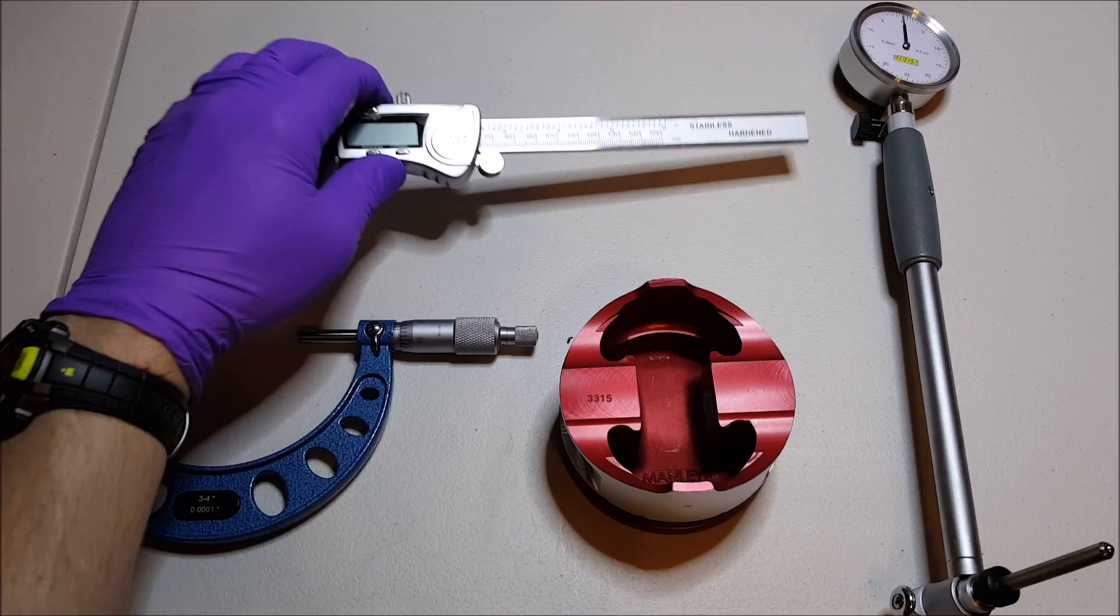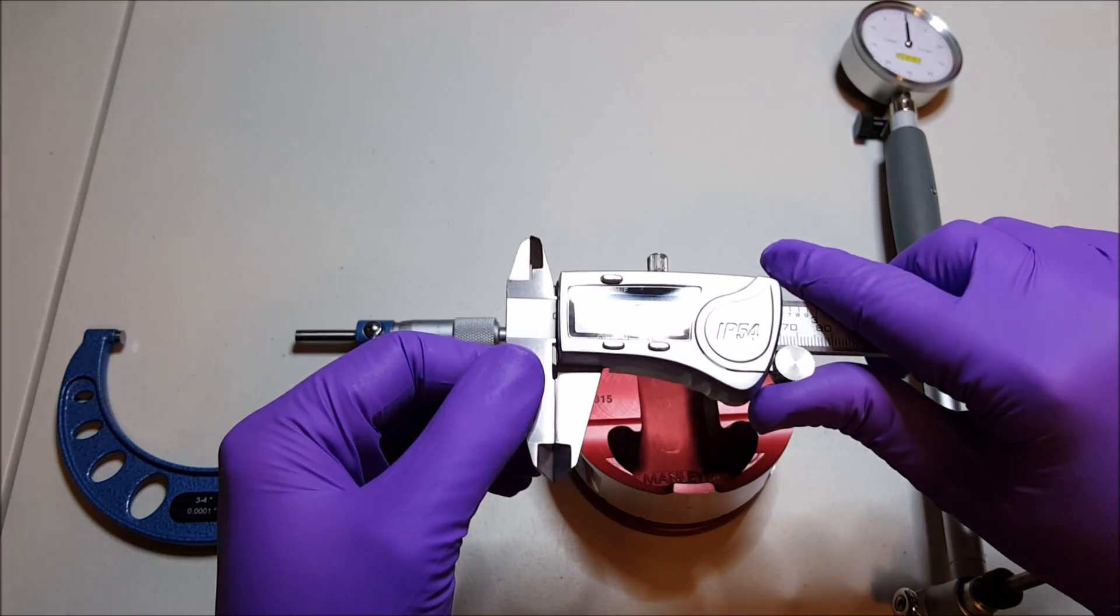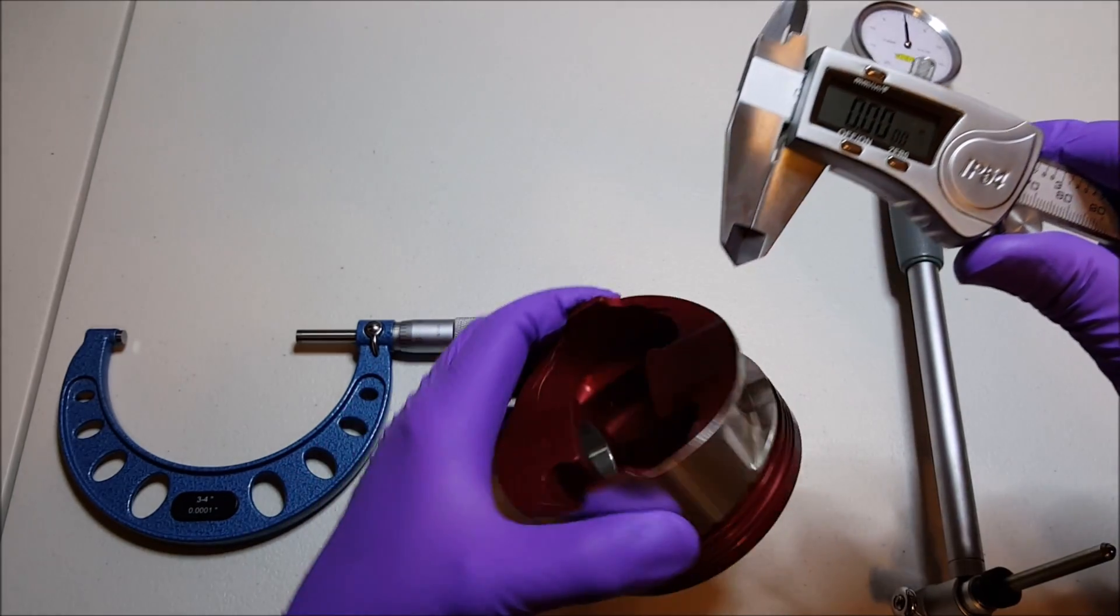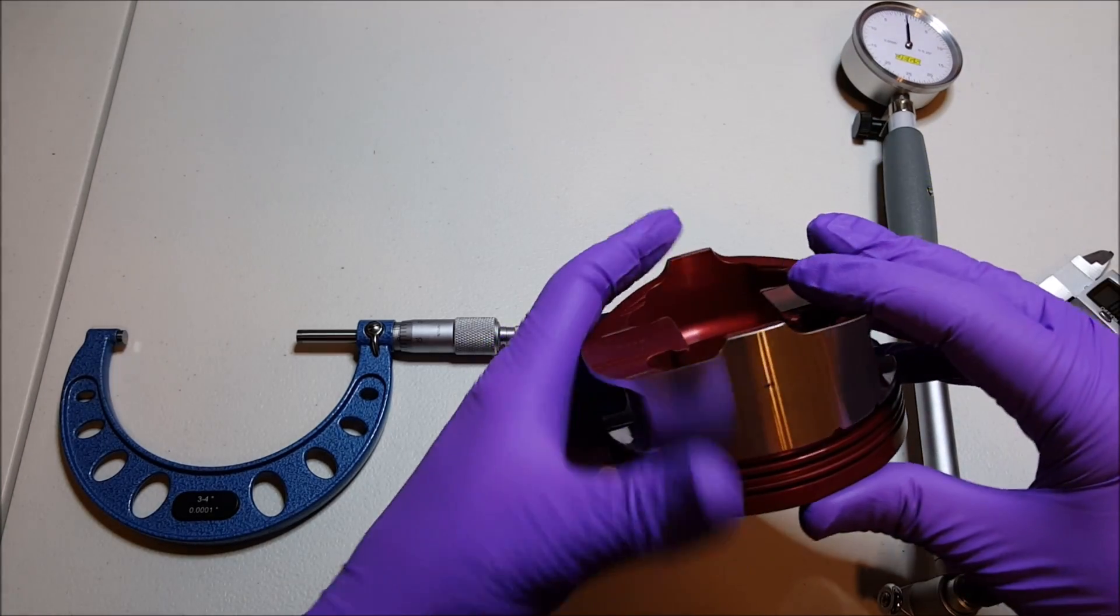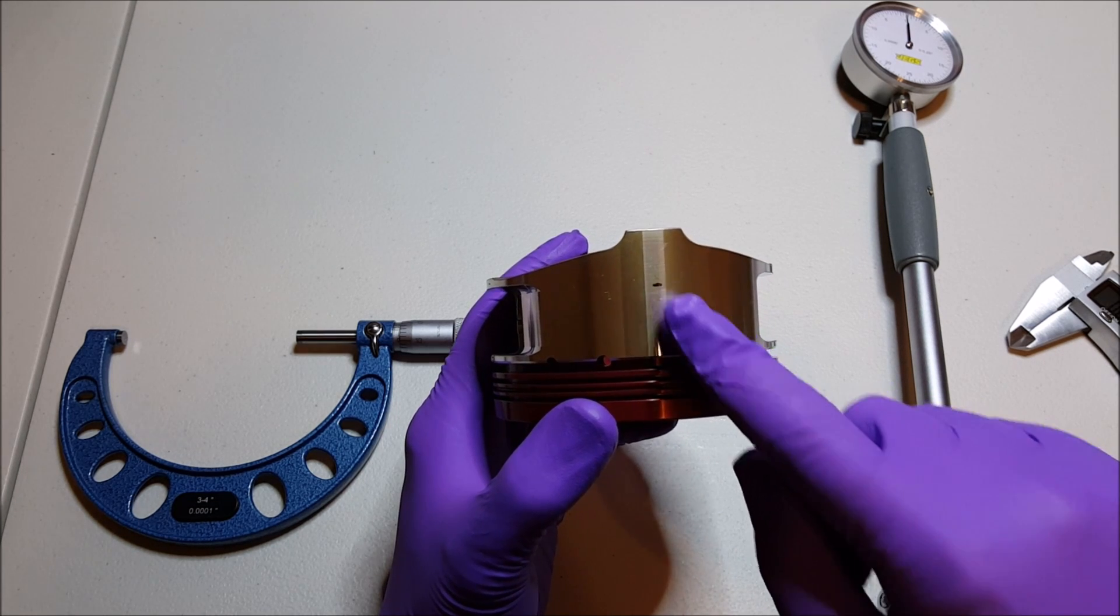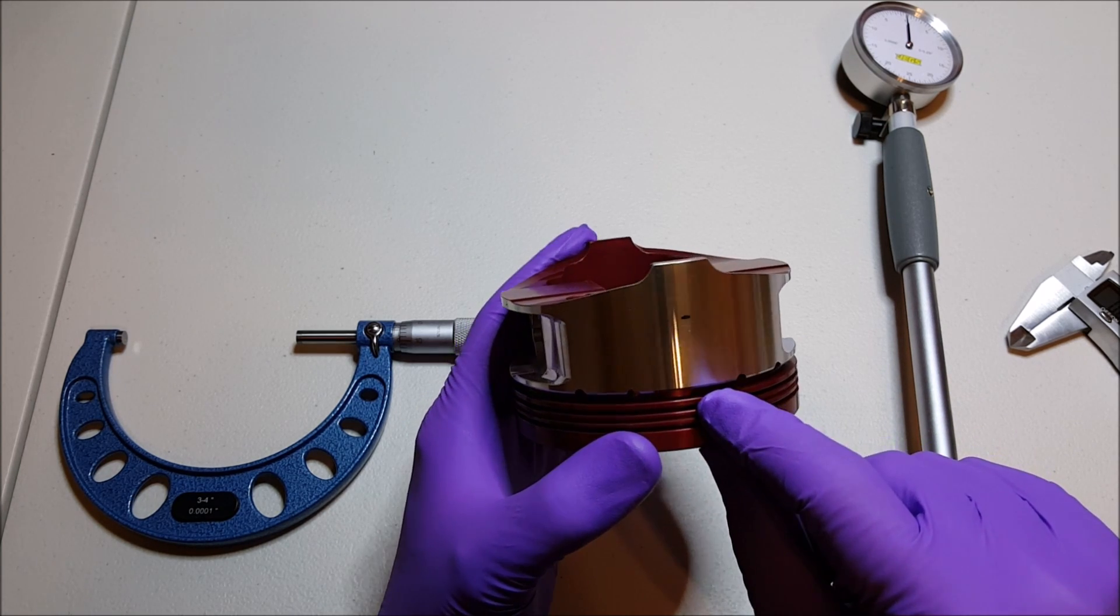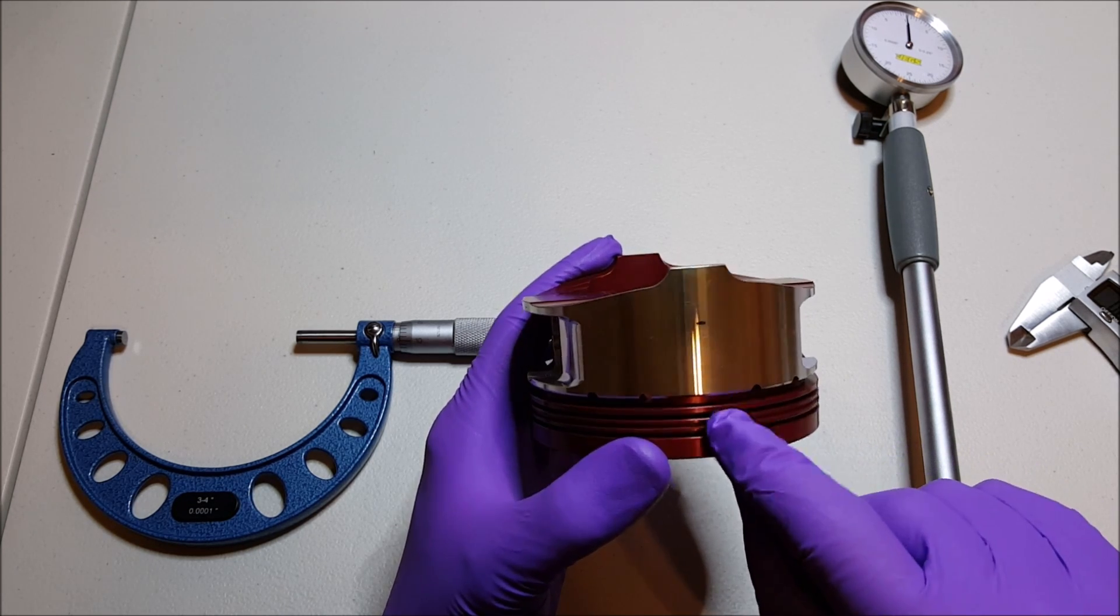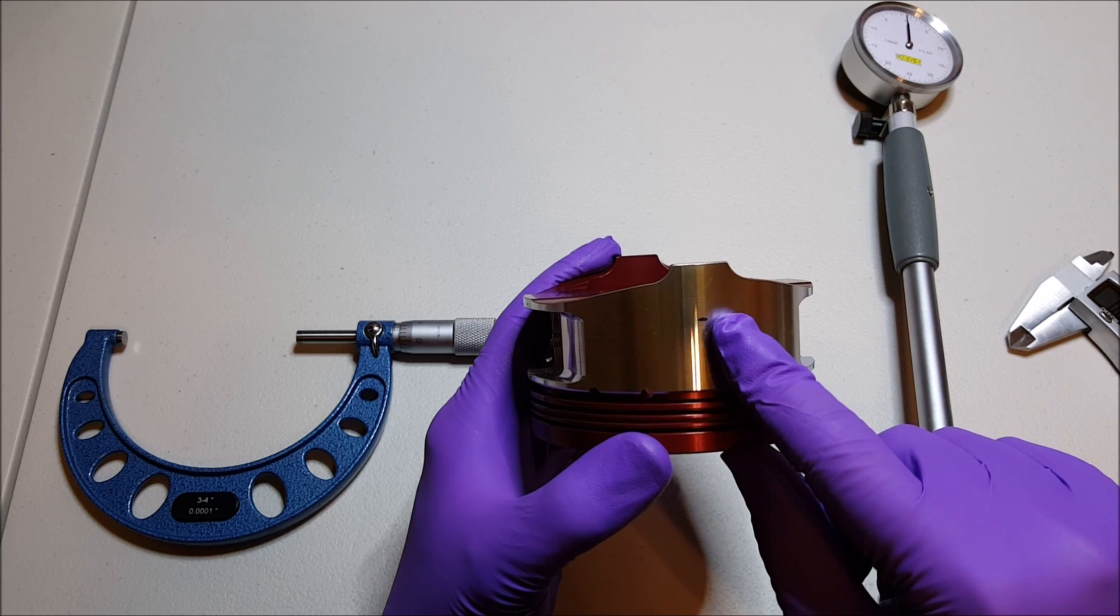The first thing you want to do is take these digital calipers. When you order your pistons, they should come with a set of documentation. You can see this black mark here. Your documentation will tell you in what location of the piston you want to do the diameter measurement at. For this particular piston, the distance between this surface up to here is 0.85 inches.